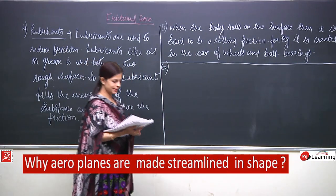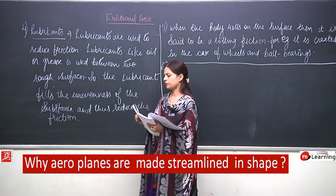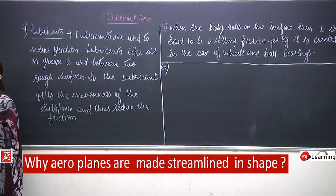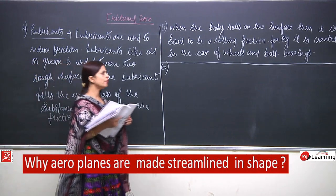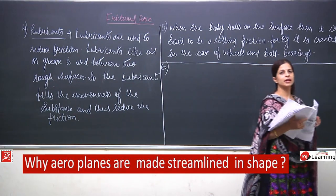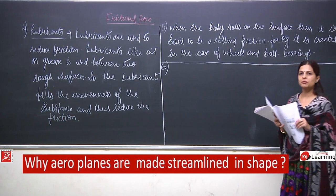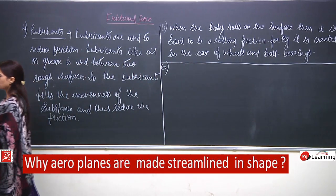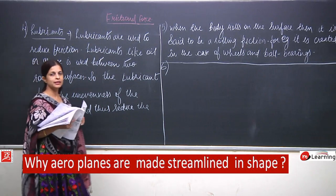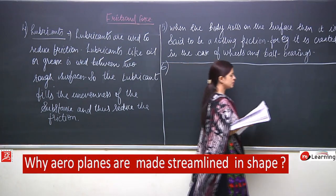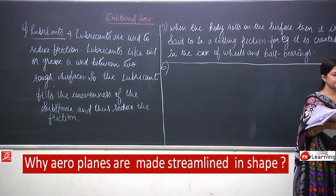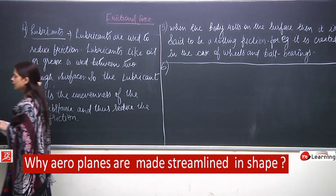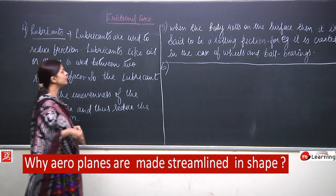Now question number six: a sewing machine is often oiled — why? We just studied about lubricants. Oil is used as a lubricant to reduce the friction. Now we will also discuss question about why aeroplanes are made streamlined. Fluids — which means liquids and gases — create a kind of frictional force.